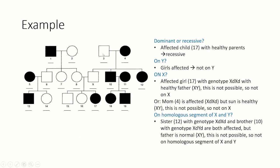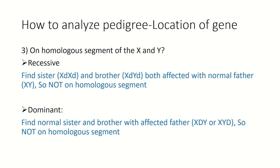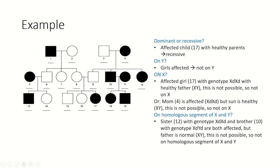Let's try this example from the pedigree. First of all, is it dominant or recessive? This individual is diseased but her parents are normal, so it is recessive. Because it's recessive, I take the recessive branch. Is it on Y? No, because girls are affected.